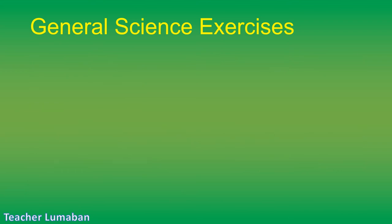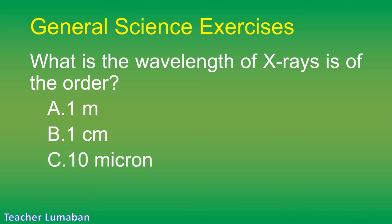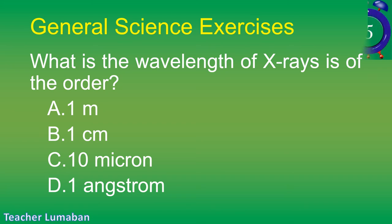What is the wavelength of X-rays of the order? Letter A: 1 m. Letter B: 1 cm. Letter C: 10 micron. Letter D: 1 angstrom.